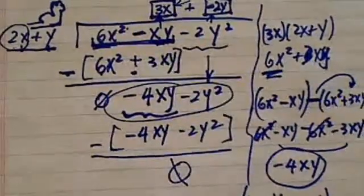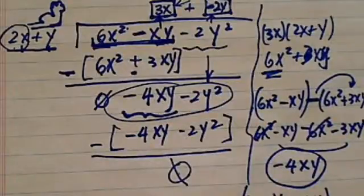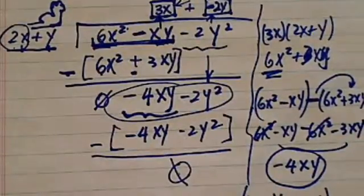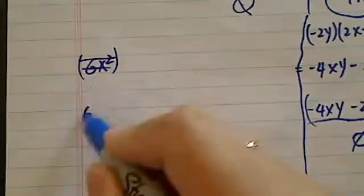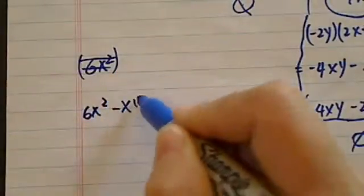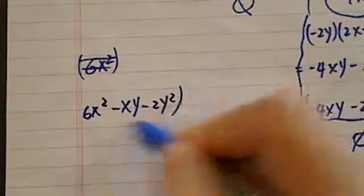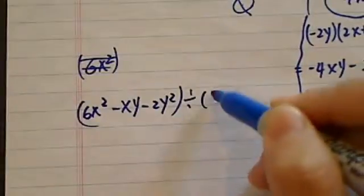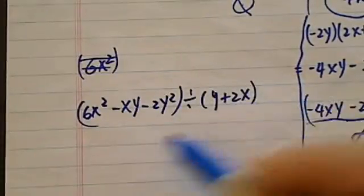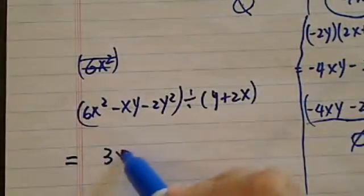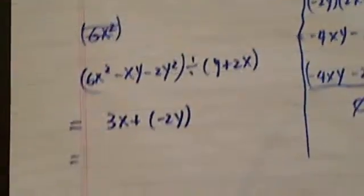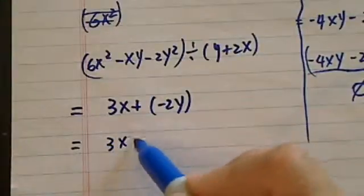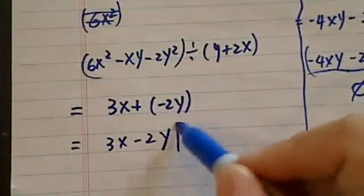So the answer when you divide those two is... Let's try again. Put it back over here so you can see it. 6x squared minus xy minus 2y squared. If you divide this by y plus 2x, your answer is 3x plus 2y. If you want to simplify one more step, it's 3x minus 2y. Here's your answer.